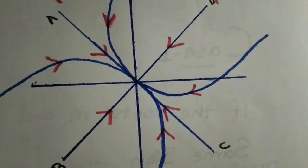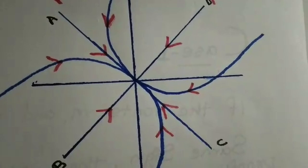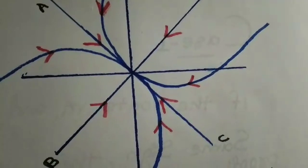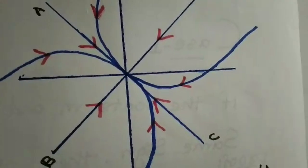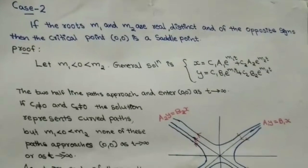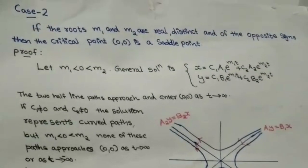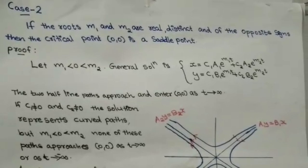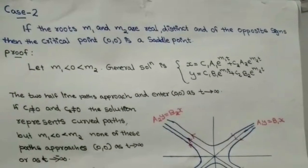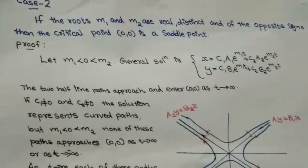We conclude that if the roots m1 and m2 are real, distinct, and of the same sign, then the critical point (0,0) is a node. Now consider Case 2: if the roots m1 and m2 are real, distinct, and of opposite signs, then the critical point (0,0) is a saddle point.